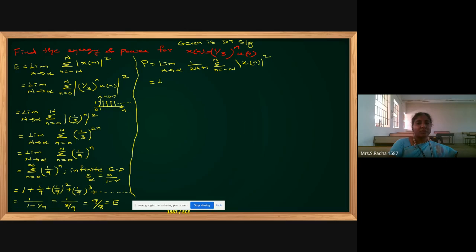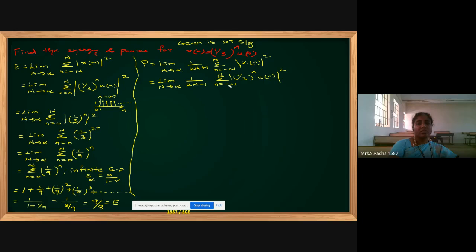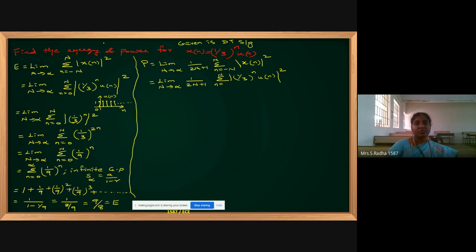For power calculation, the formula is: limit N tends to infinite, (1/(2N+1)) times summation of small n from minus N to plus N of modulus of x(n) squared. I will substitute the given signal: (1/3)^n · u(n), inside the modulus squared. Because u(n) is present, I can directly change the lower summation limit to 0, since u(n) is only on the positive side and its value is 1.